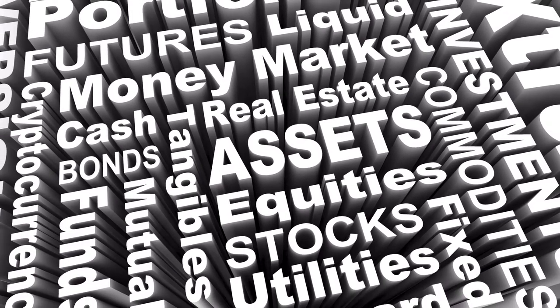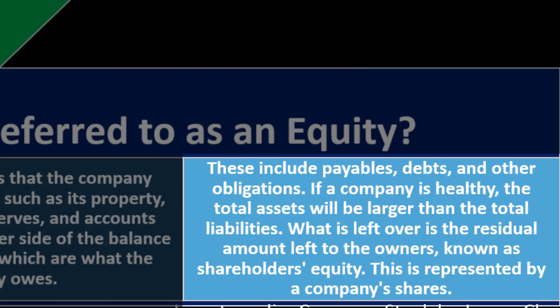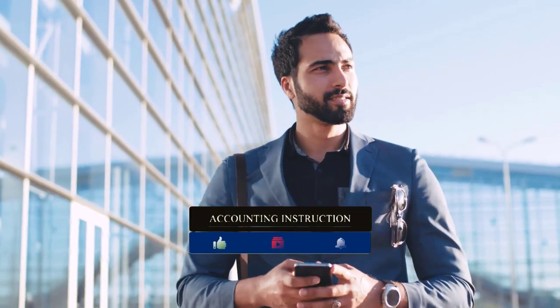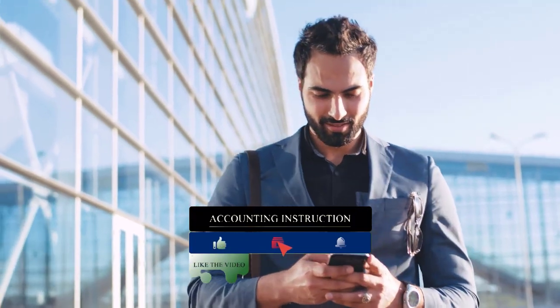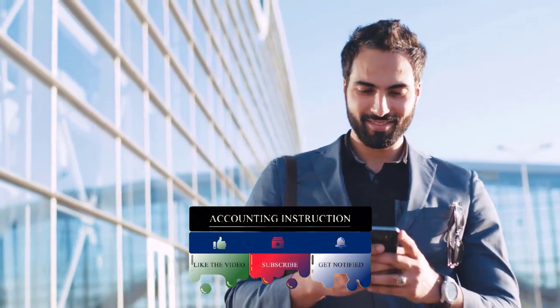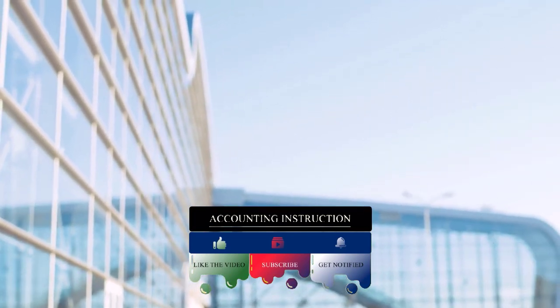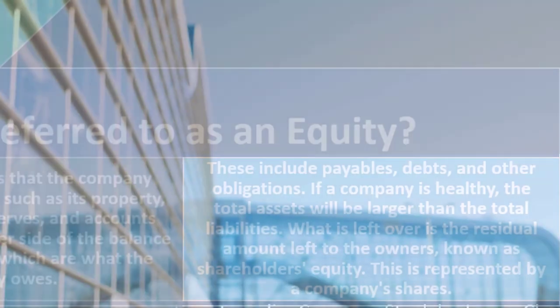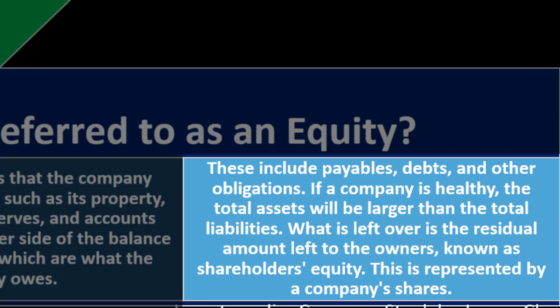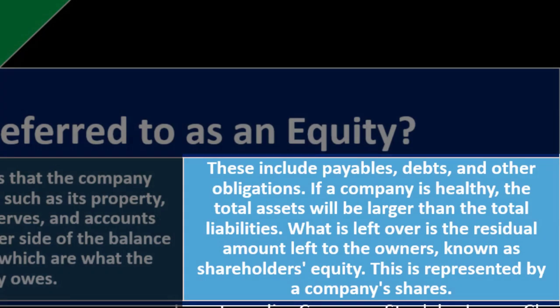The accounting equation is: assets equal liabilities plus equity. Assets represent what the company has; liabilities and equity represent who the company owes those assets to. As a separate legal entity, the company owes its assets either to third parties like banks for loans, or to the owners — the shareholders. Assets minus liabilities equals equity — the net value belonging to shareholders.